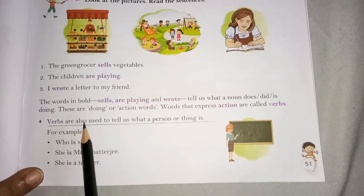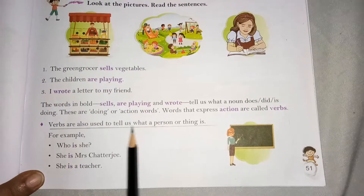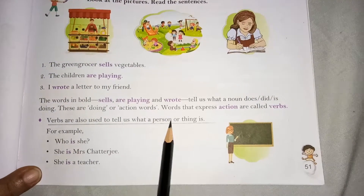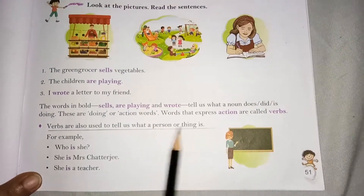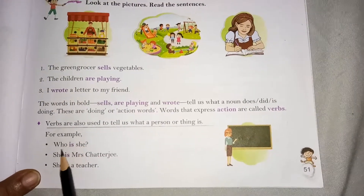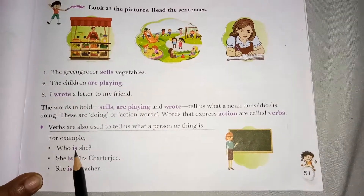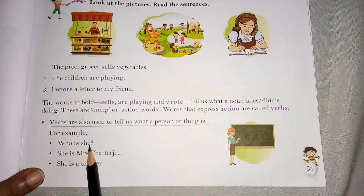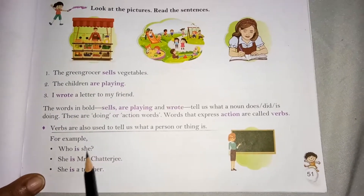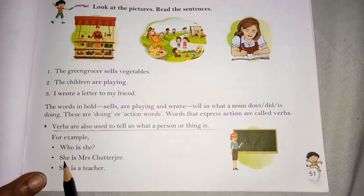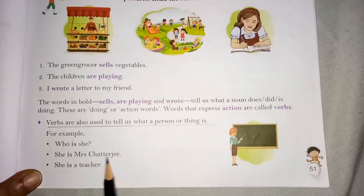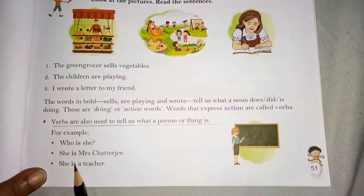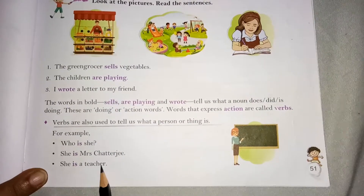Verbs are also used to tell us what a person or thing is. For example, who is she? She is Mrs. Chatterjee. She is a teacher.